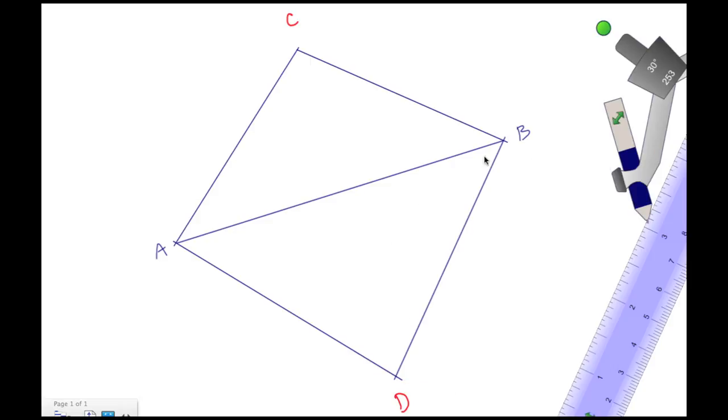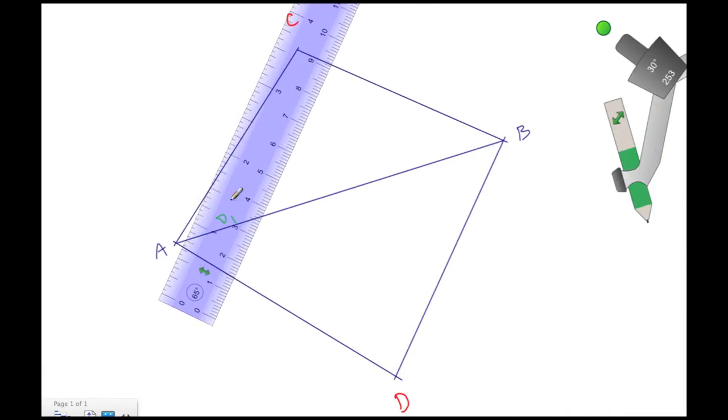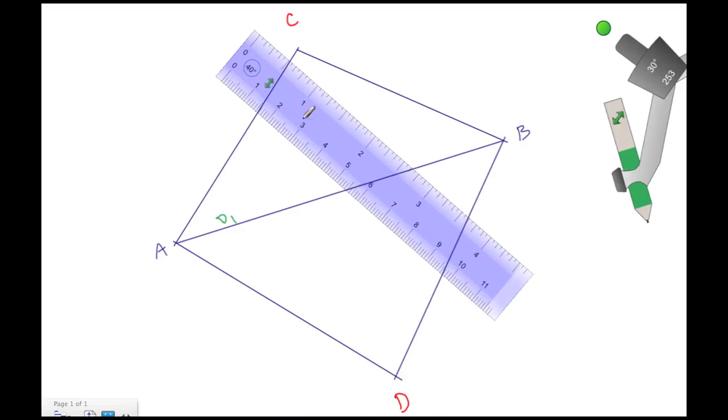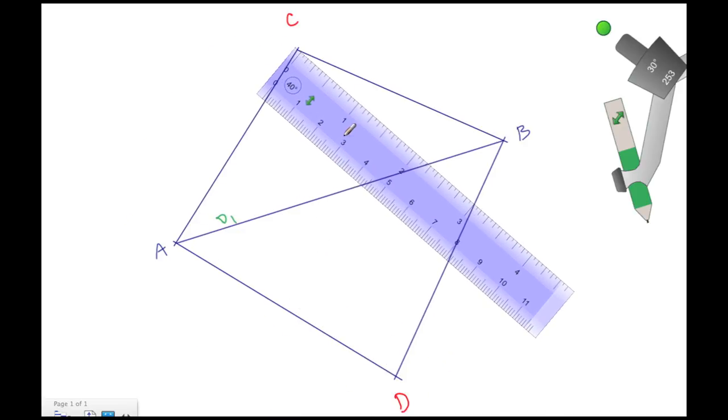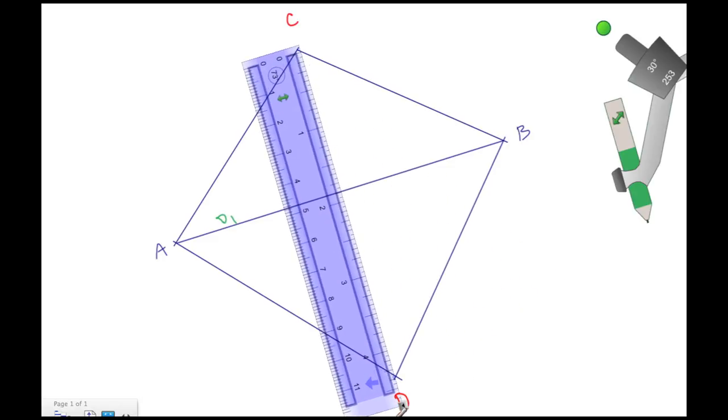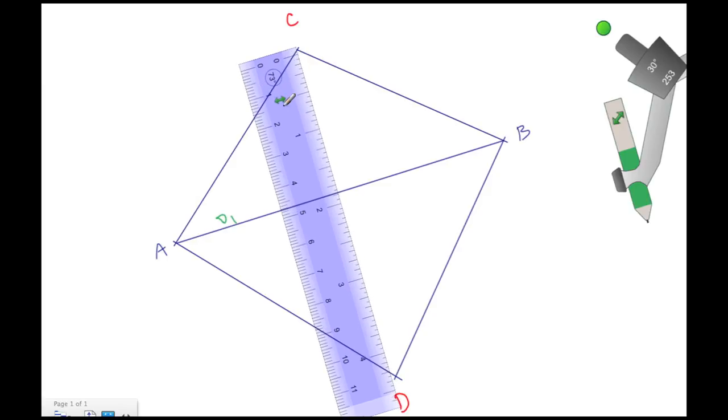First let's go ahead and add another diagonal. This here is diagonal one, I'm going to label that D1 here in green. Then let's move our straight edge over and then let's go ahead and draw in diagonal two. Again, let's line this up here at C and then we're going to extend our line segment down here to D.